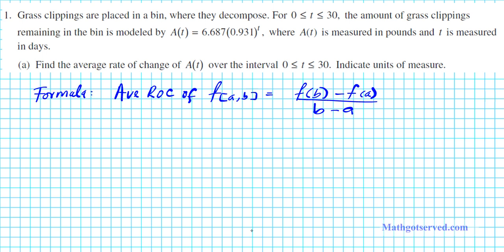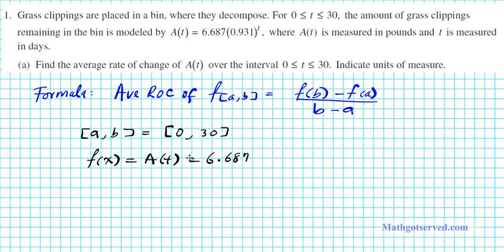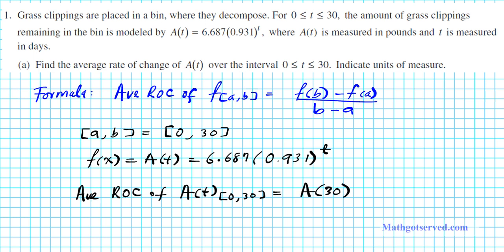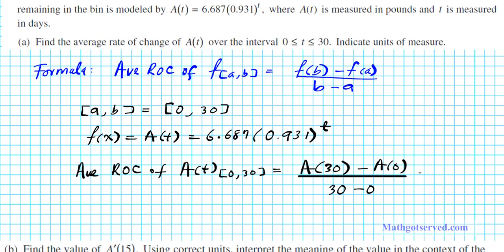In this situation the interval [a, b] is [0, 30] and our function is the model A(t) = 6.687 × 0.931^t. So the average rate of change of A(t) on the interval from 0 to 30 is simply A(30) minus A(0), that entire expression divided by 30 minus 0.